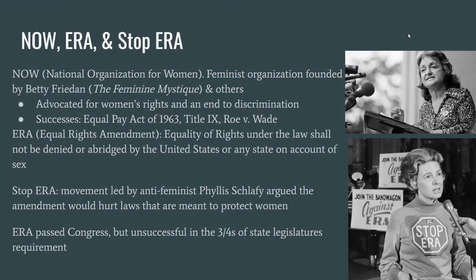With the feminist movement, we'll wrap several key terms into one. The National Organization for Women, or NOW, organized in the early 1960s, led by feminist author Betty Friedan who wrote The Feminine Mystique. The group advocated for women's rights and helped achieve the Equal Pay Act of 1963, Title IX, and Roe v. Wade. Their ultimate push was for the Equal Rights Amendment, which passed Congress but fell short of the required three-quarters of state legislature approval. It met pushback from the Stop ERA movement led by Phyllis Schlafly, who argued the amendment would hurt protective laws for women, like exclusion from the military draft.